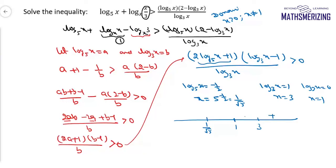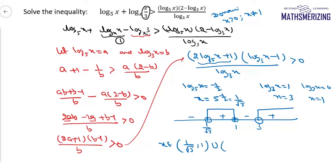The sign of the rightmost interval is positive, giving the pattern: plus, minus, plus, minus. Since we need greater than 0, we take the positive regions. So x lies between 1 upon root 5 and 1, or x is greater than 3 — that is, x belongs to (1/√5, 1) union (3, ∞).